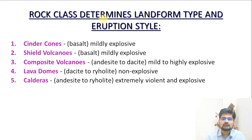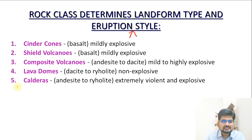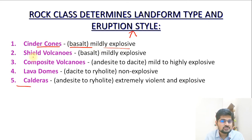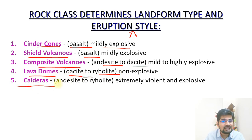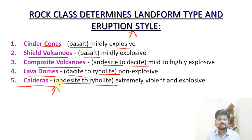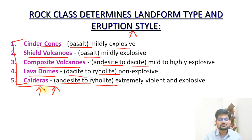Rock class determines landform type and eruption style. Cinder cones have basalt — mildly explosive. Shield volcanoes also have basalt. Composite volcanoes have andesitic and dacitic material. Lava domes have dacite to rhyolite. Calderas have andesite to rhyolite.